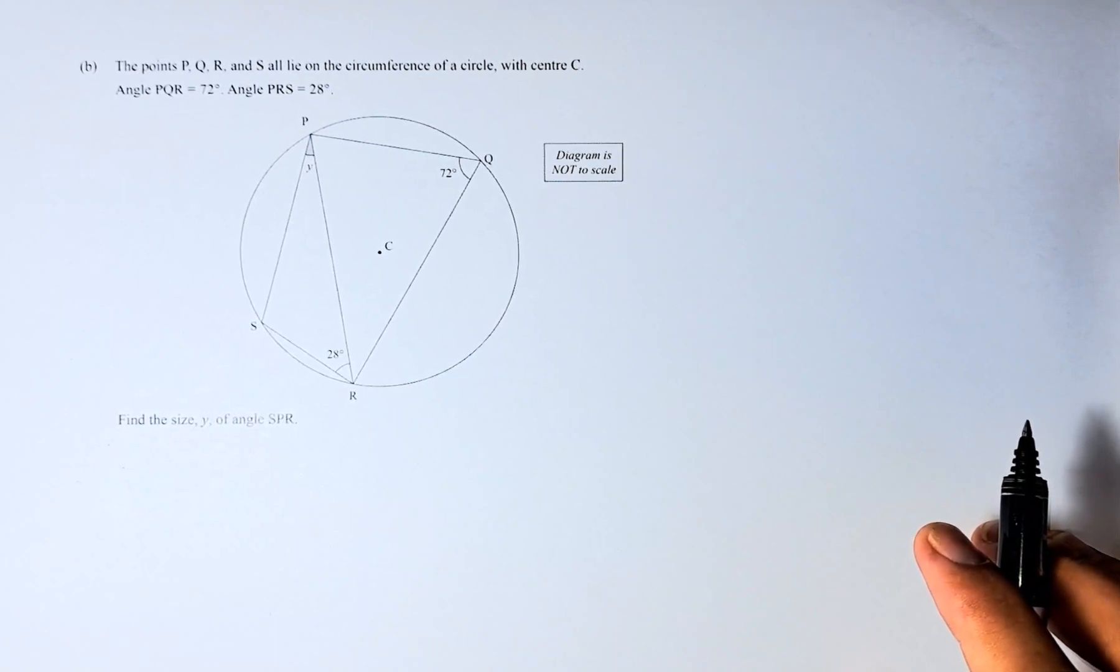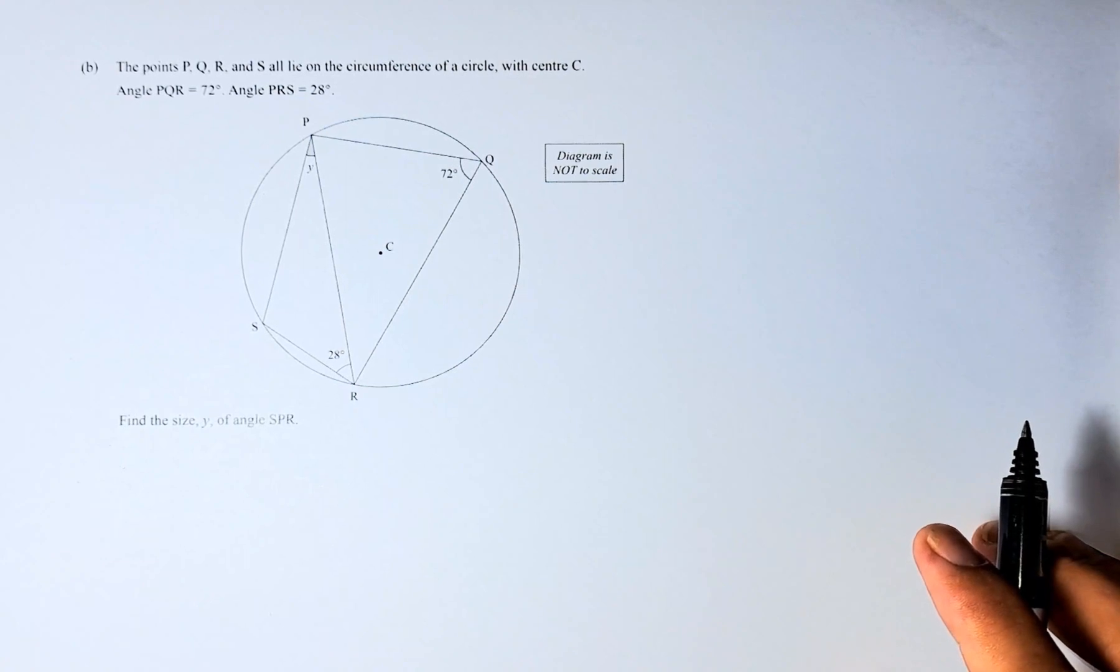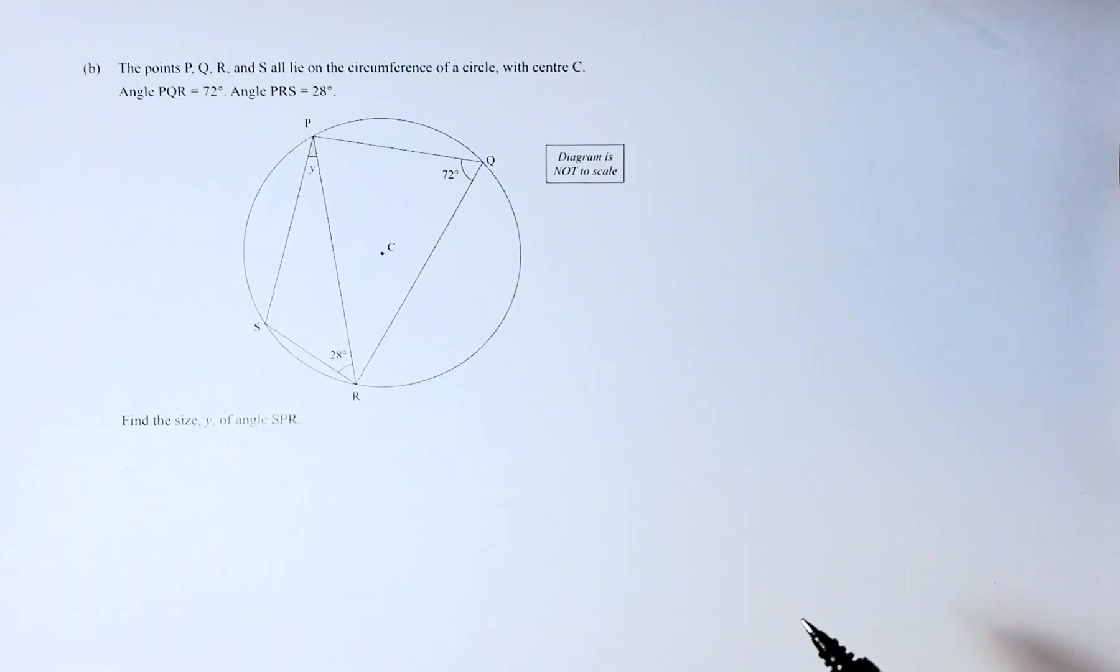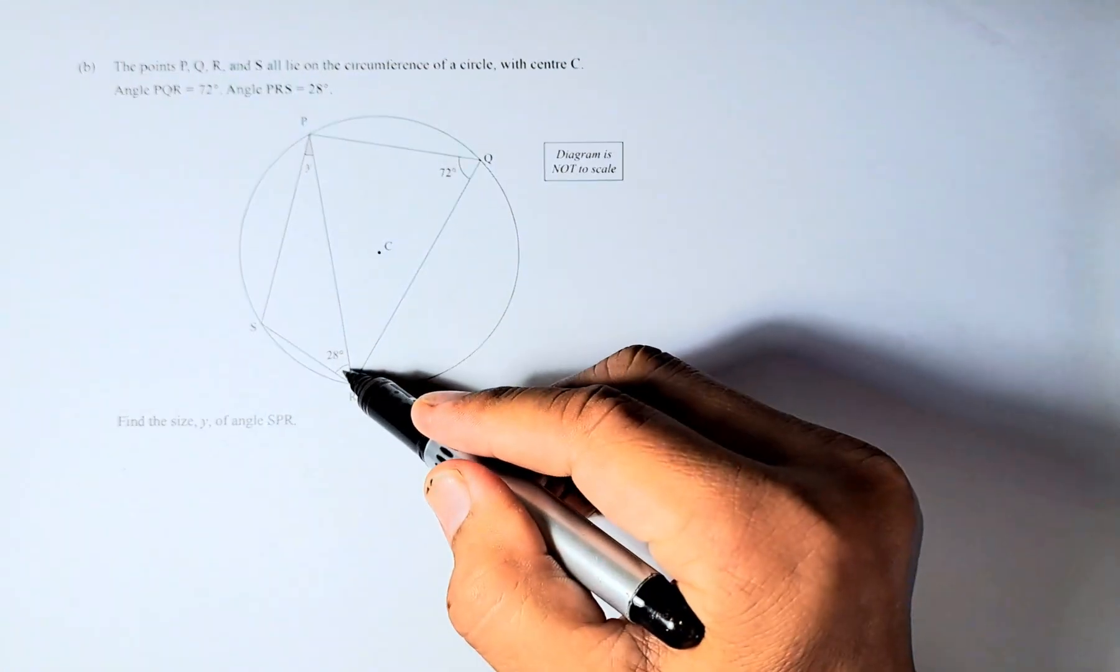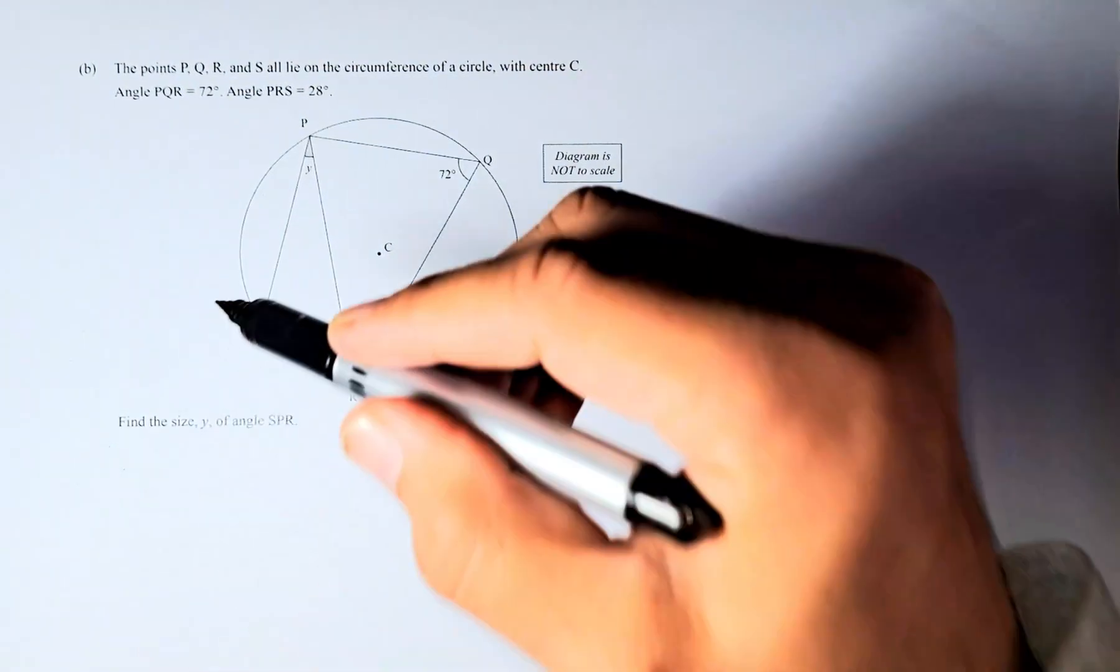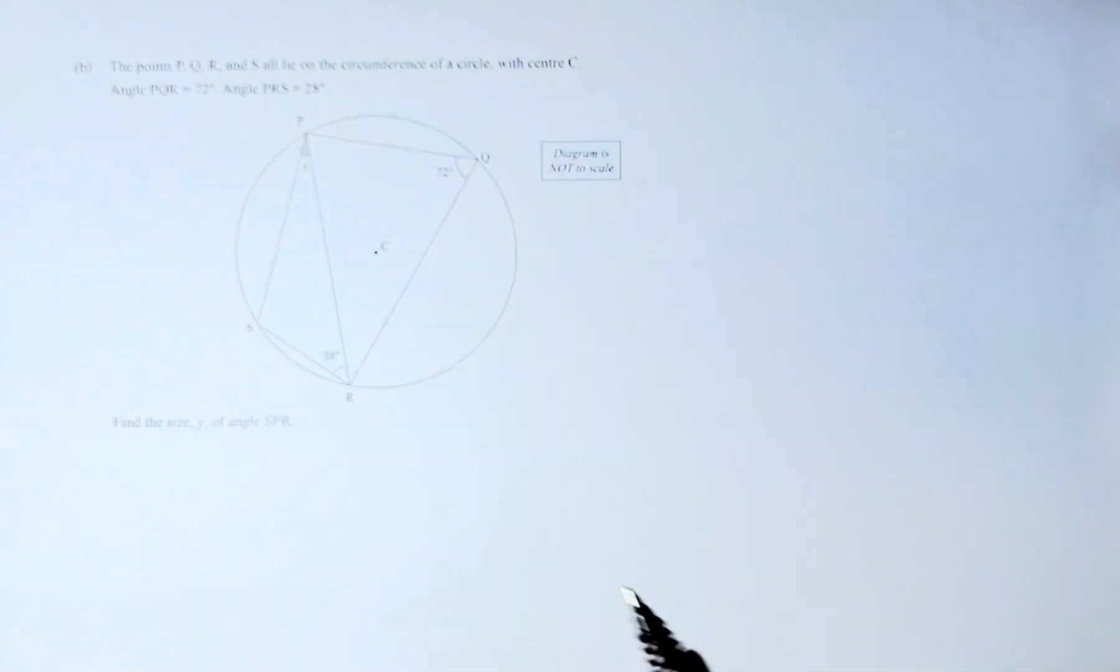The points P, Q, R, S all lie on the circumference of a circle with center C. Angle PQR is 72 degrees, and angle PRS is 28 degrees. We are going to calculate angle Y, or angle SPR.